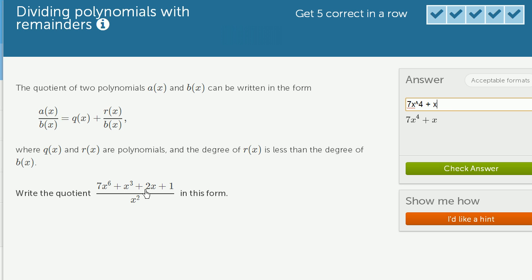And then we're going to have 2x divided by x squared. But remember, we want to write it in a form of r of x over b of x, where r of x has a lower degree than b of x. Well, 2x has a lower degree than x squared.